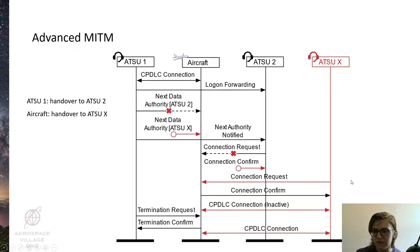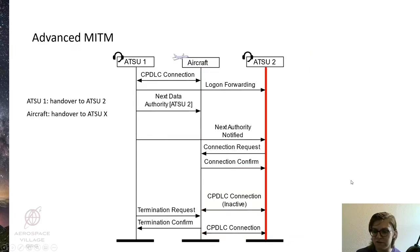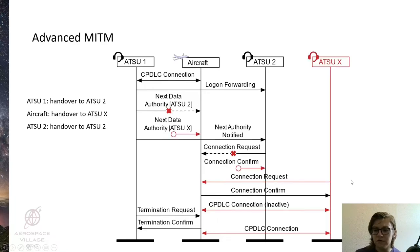And finally, if we look at it from the perspective of ATSU-2, it again appears to be a legitimate handover between ATSU-1 and ATSU-2. So the result of this attack is that the legitimate ATSUs, that is 1 and 2, think that the aircraft is connected to ATSU-2. The aircraft is instead connected to ATSU-X, which is controlled by our attacker.